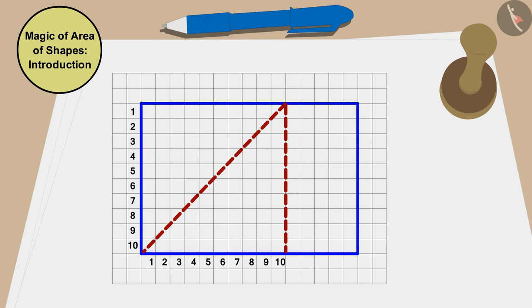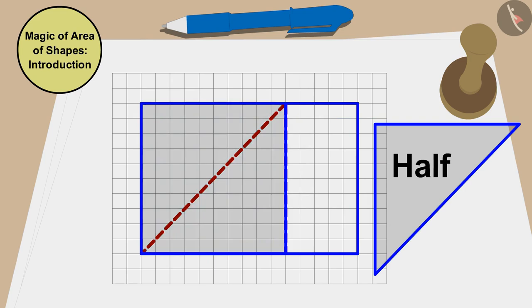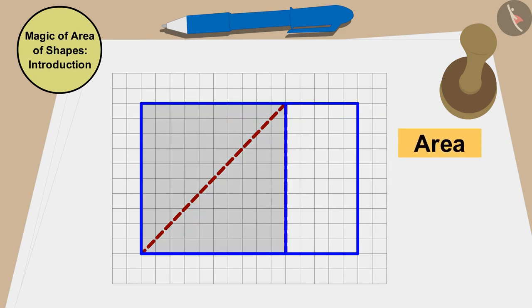If we look closely, we will find that both the triangles are half of this square. The area of this square is 10 times 10, 100 square centimeters.